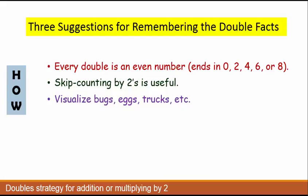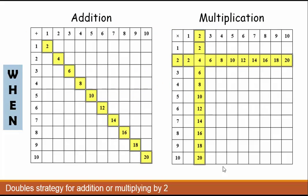Skip counting by 2 is useful. And visualizing bugs, eggs, trucks, etc., which I'll show in a moment. So if we look here in the multiplication table at all these double facts, you'll notice that these are all even numbers.